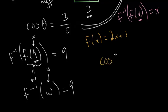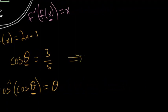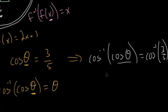Since we have the cosine of theta equal to 3 fifths, we're going to take the cosine of theta and put it inside the inverse cosine function. Because when we put the function inside the inverse function, what we get back is just the independent variable. So we're going to take the inverse cosine of each side of this equation. We have the inverse cosine of the cosine of theta, which equals the inverse cosine of 3 fifths. When you put the function inside its inverse, you get back the independent variable, so theta is equal to the inverse cosine of 3 fifths.